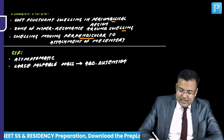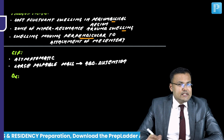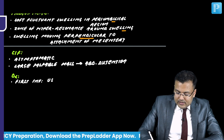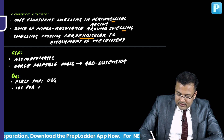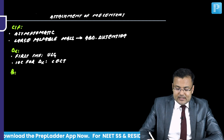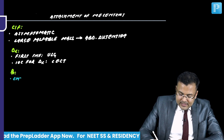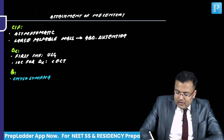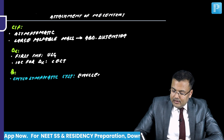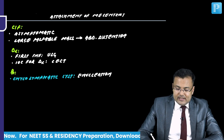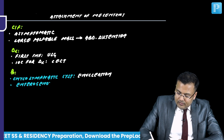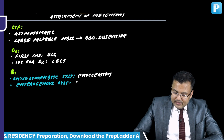The first investigation done for diagnosis is ultrasound, and investigation of choice is CT. Treatment recap: for chylolymphatic cyst, we go for enucleation; for enterogenous cyst, we go for resection and anastomosis.